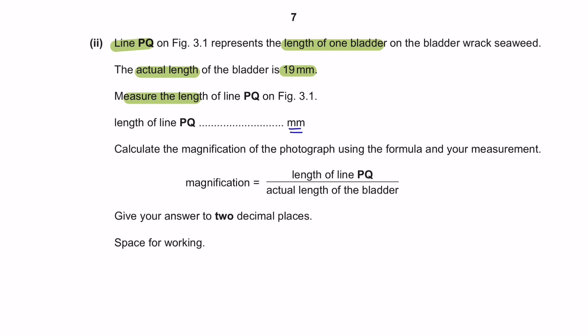However, we are required to give our answer in millimeters. To convert centimeter to millimeters, we have to multiply by 10. So that would be 12 mm. Next, calculate the magnification of the photograph using the formula and your measurement. And the formula of magnification has been given over here.